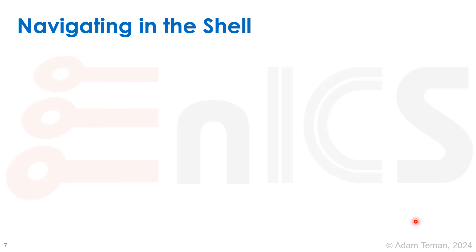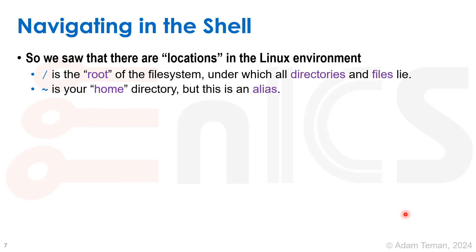We're inside the shell and it's very important that we know how to navigate. There are locations in the Linux environment. I mentioned the slash, which is the root of the file system. The file system is a big tree and the top of the tree — where everything starts — is this slash, this root. All directories and files lie inside the root. There may be files here and directories that have files inside them and directories inside them. We traverse down this tree until we get to the file we want to run or work with.